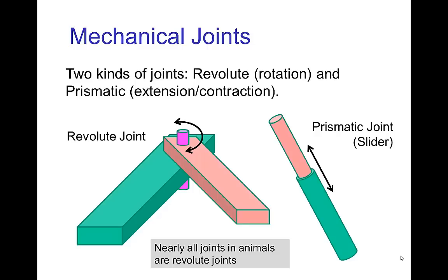In animals, virtually all the joints are revolute joints, which means a joint that produces a rotation. In robots, there is another common type of joint called the prismatic joint, where something extends or contracts in length.